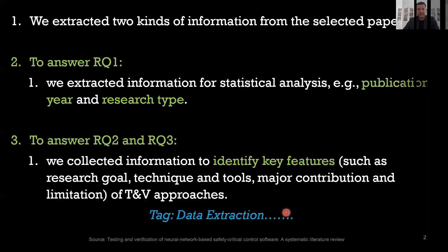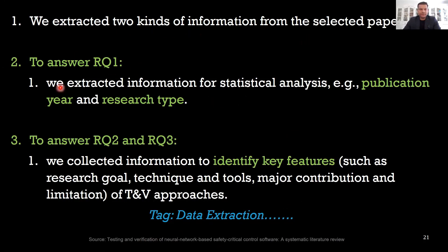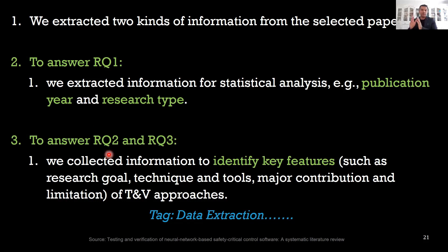Let's see an example. From the selected papers, two kinds of information were extracted. To answer research question one, information for statistical analysis was extracted — for example, publication year and research time. To answer research questions two and three, information was collected to identify key features such as research goal, techniques and tools, major contribution, and limitations. This connection between the research question and the information you need to select from each empirical paper should be documented, and this is called data extraction.